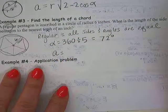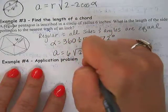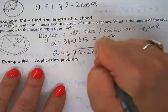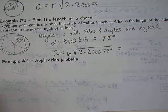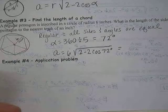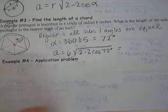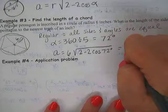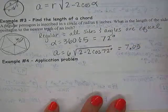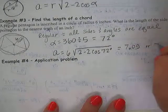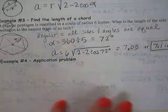Now we go ahead and use our formula. A equals radius. Did they give us the radius? Yes, they did. Six times the square root of two minus two cosine 72 degrees. Put that in our calculator. And I find that the arc length is apparently 7.05. It says the nearest tenth of an inch, so 7.1 inches.